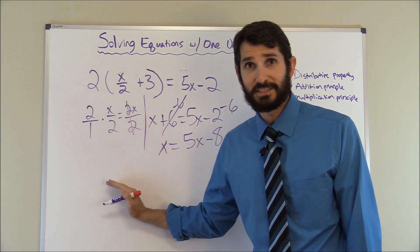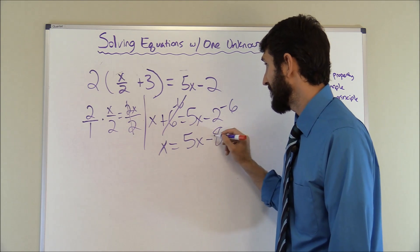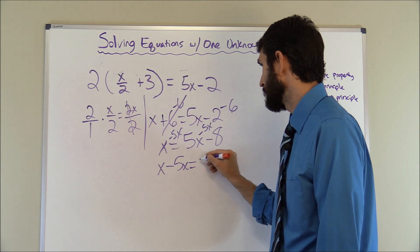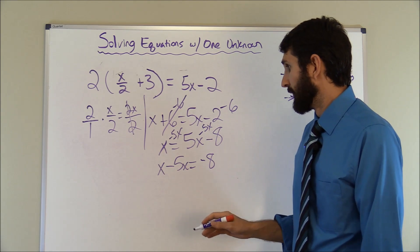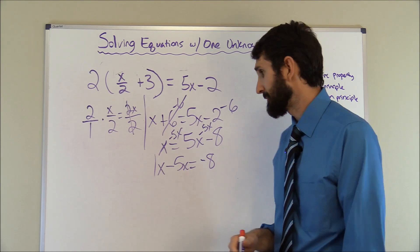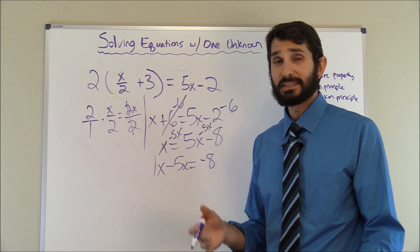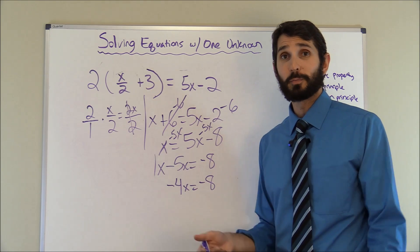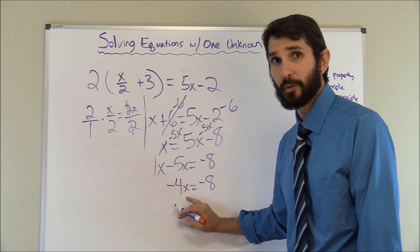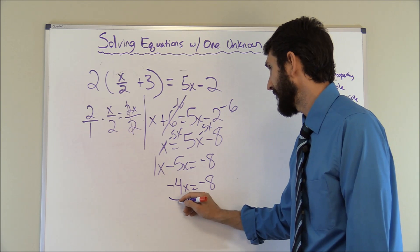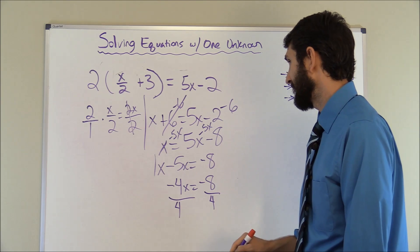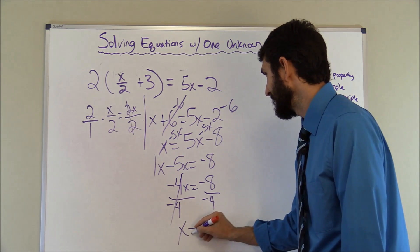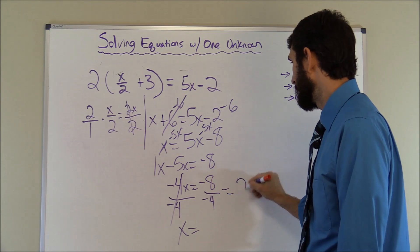Now we move five X to the left using the addition principle: subtract five X from both sides. X minus five X — since X is the same as one X — gives us one X minus five X, which is negative four X equals negative eight. Using the multiplication principle, we divide both sides by negative four. Negative four divided by negative four cancels out, and negative eight divided by four gives us a positive two. So X equals two.